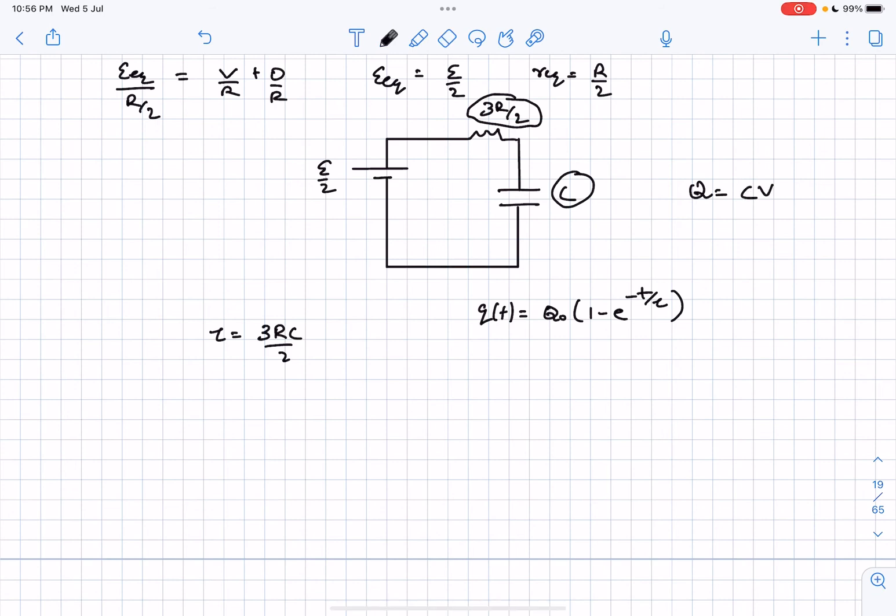I can write the charge on the capacitor as C multiplied by V by 2, which is CV by 2. Just substituting it into this equation, we'll get the charge as a function of time.